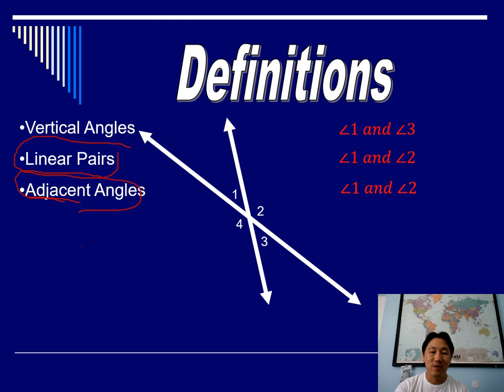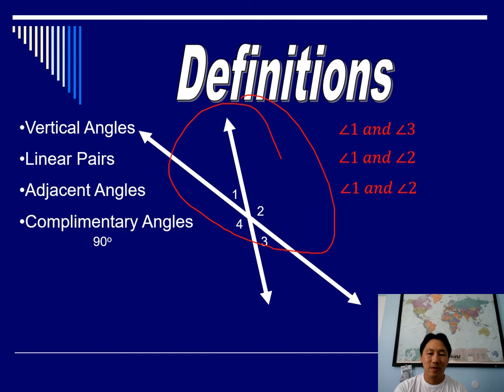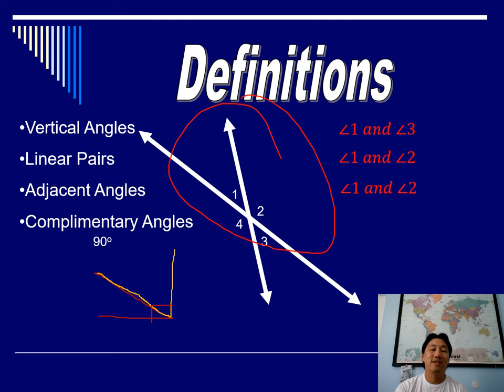Complementary angles — remember from algebra: complementary means angles that add up to 90 degrees. There's nothing in our original picture that adds up to 90 degrees, so here's a separate example. Here's one angle and here's another, and if these two together make 90 degrees, then we call them complementary angles.